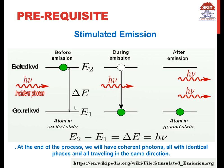Now when the atom is already in its excited state and if it interacts with an incident photon, this kind of interaction may result in the emission of another photon equivalent to the energy difference between the ground level and excited level energy, and as a result we would have two photons. At the end of this process we are going to have two photons which would be coherent, having identical phases and traveling in the same direction.